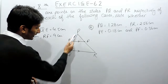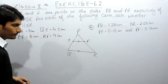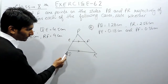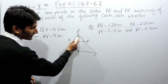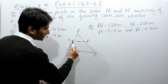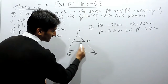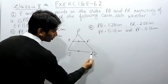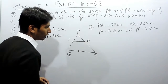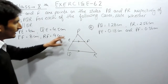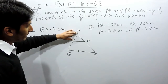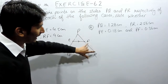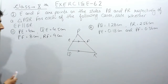A triangle PQR is given to you, and E is the point on PQ and F is the point on PR. You have to state whether this line EF is parallel to QR or not, and the measurements of these sides are given to you.